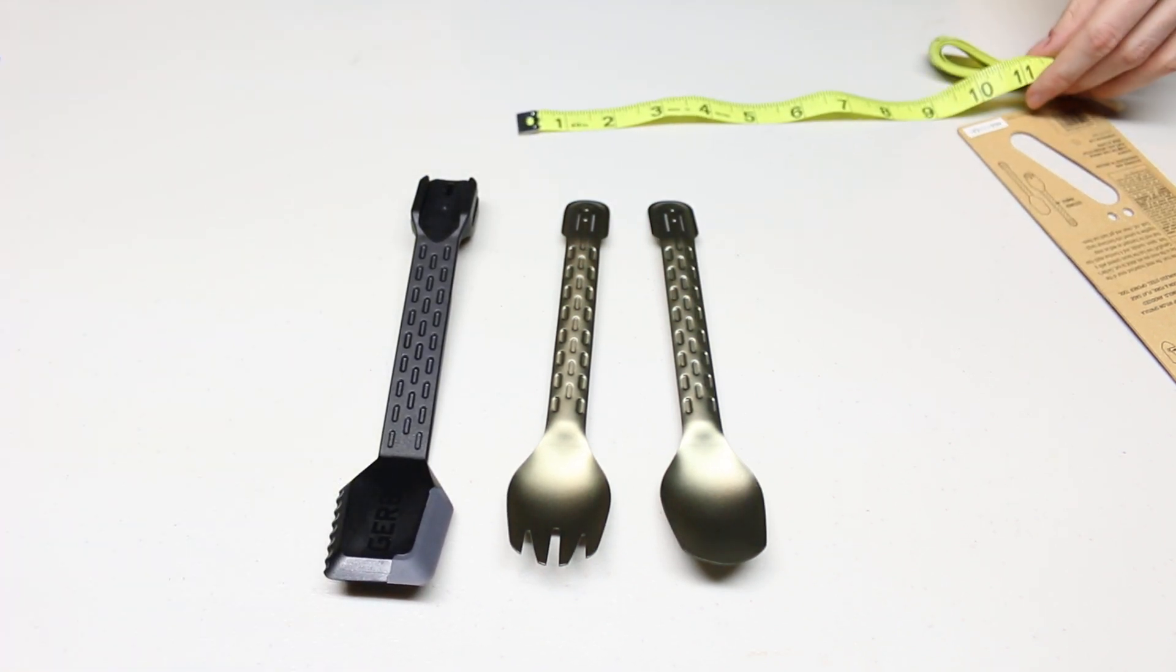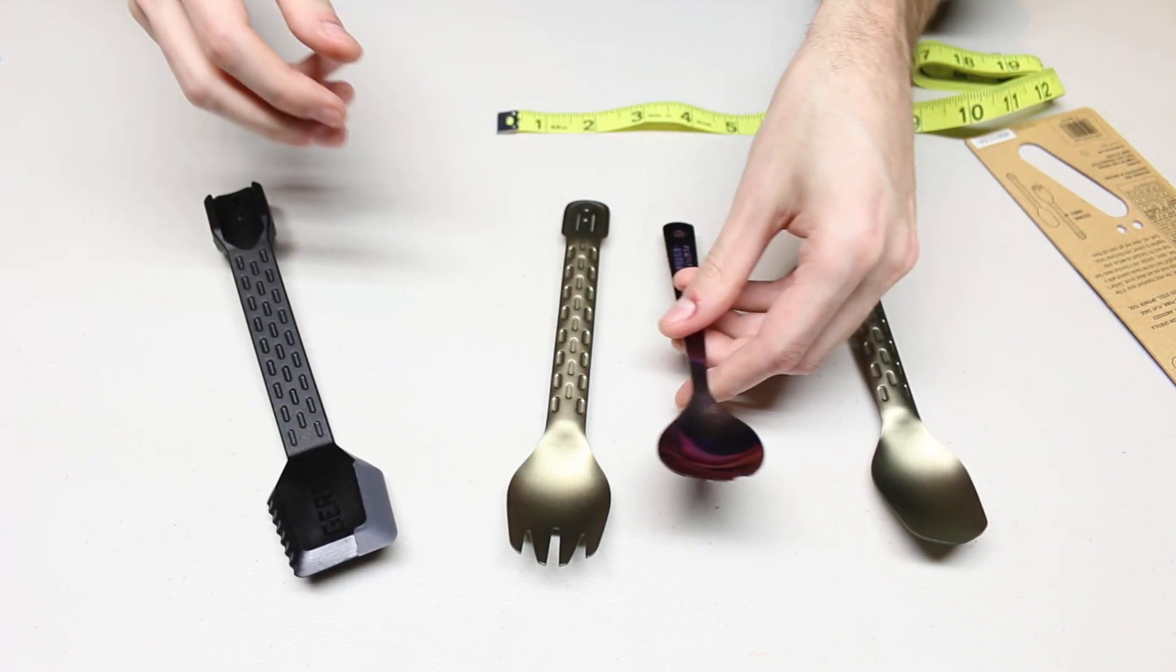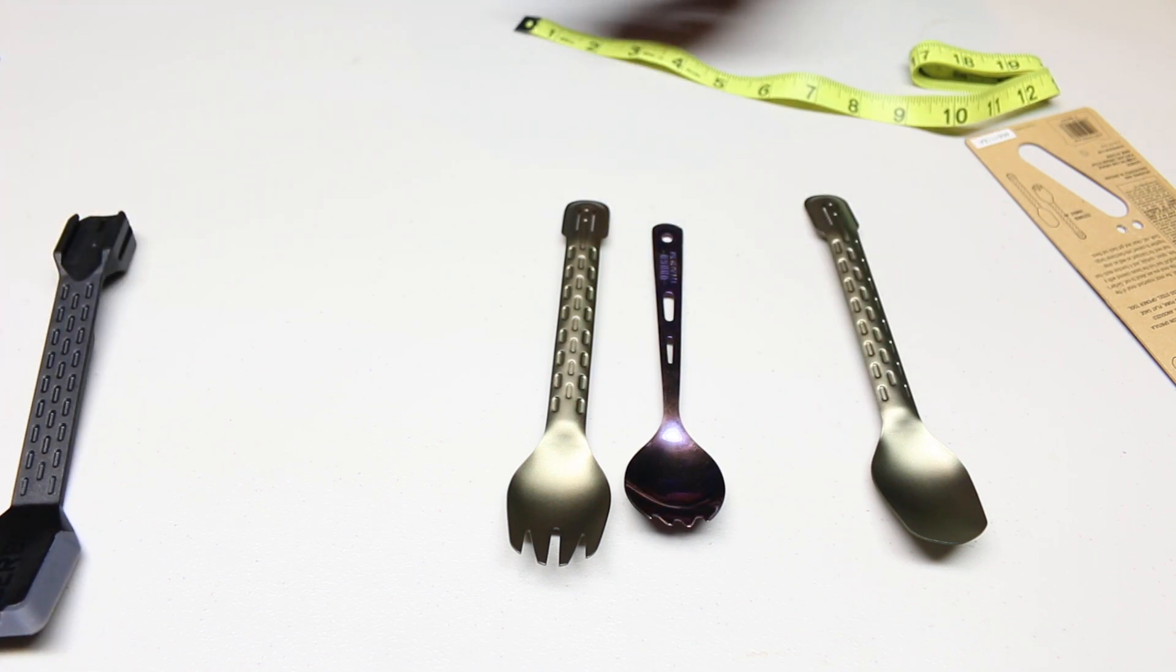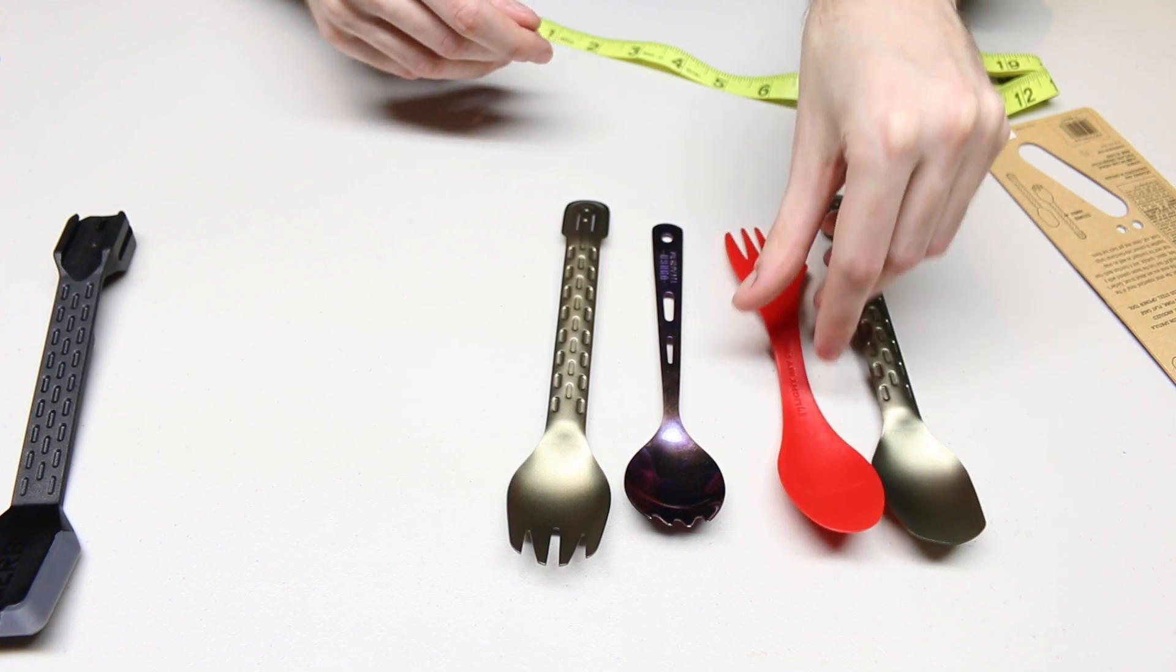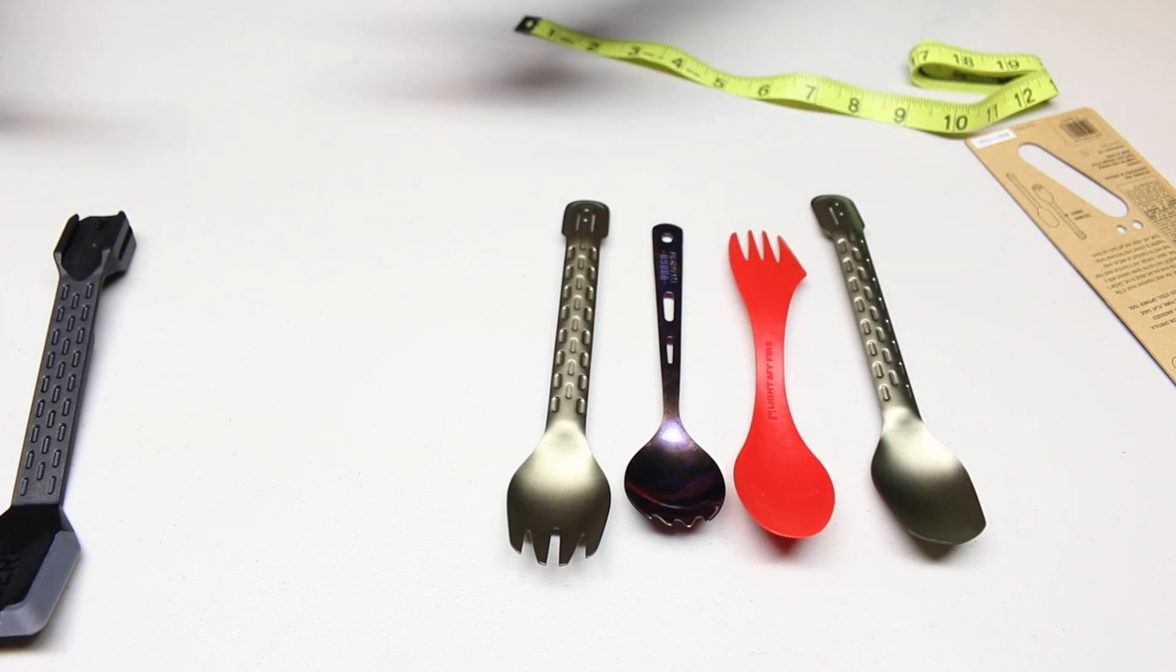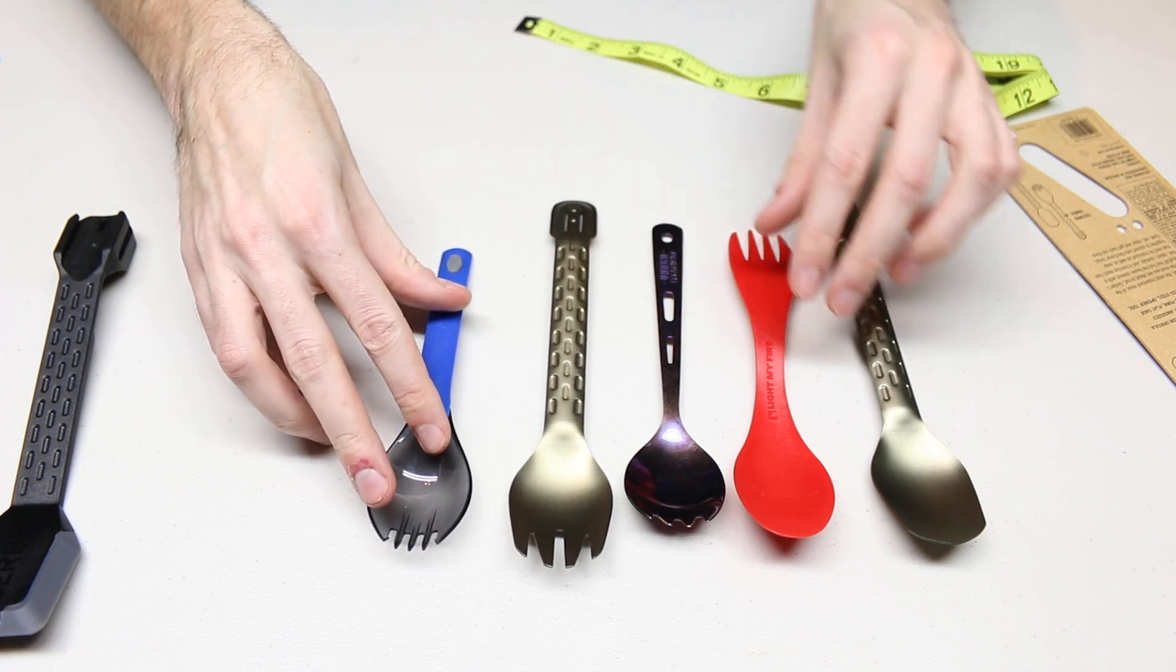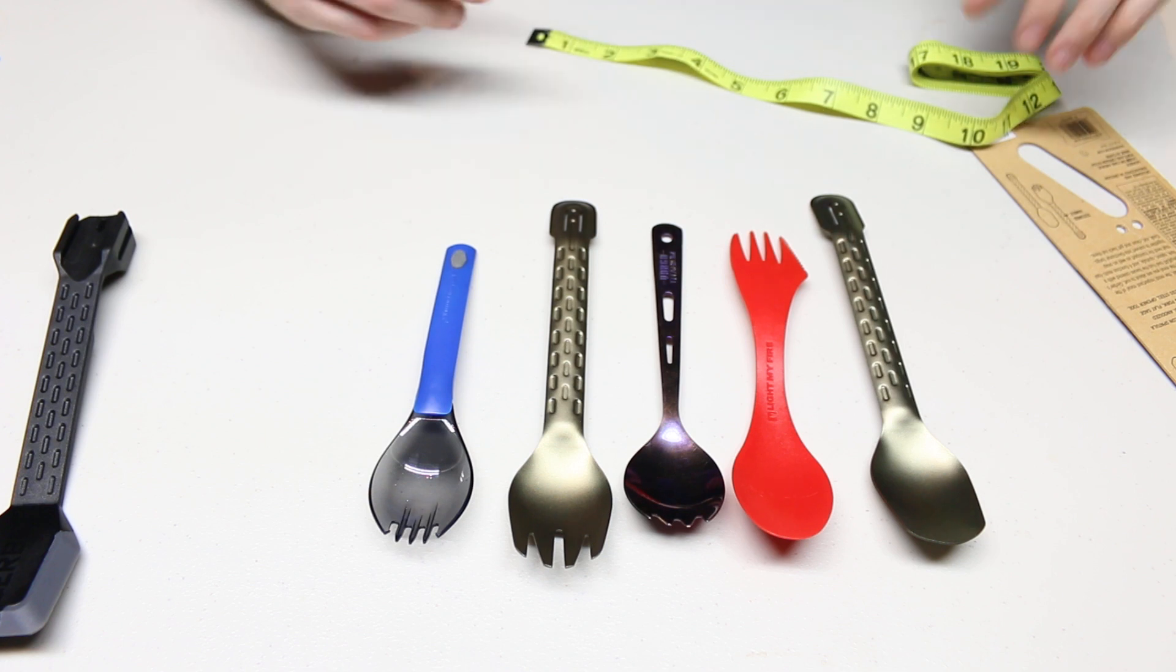When you compare that to some other spork options, so we have a Vargo titanium, so that is a popular spork. We have probably the most popular, which is the Light My Fire spoon and fork. And then you have a GSI telescoping spork. So you can kind of compare these. This is the longest variant right there.